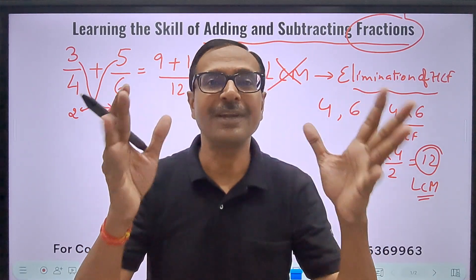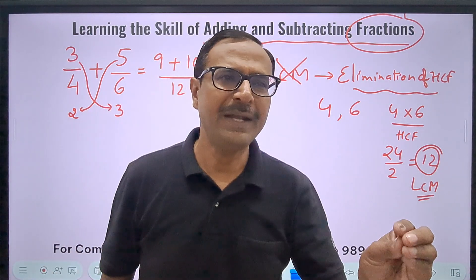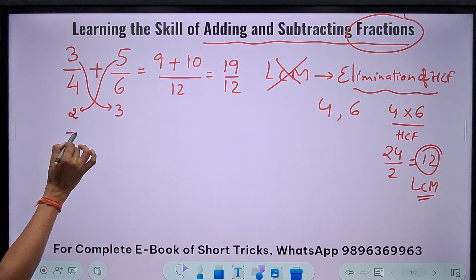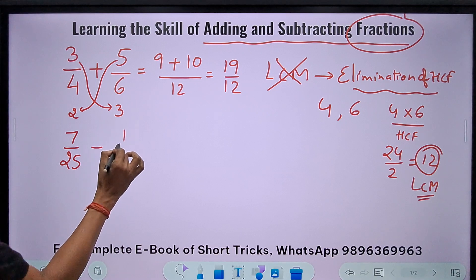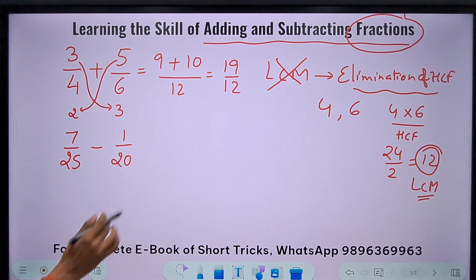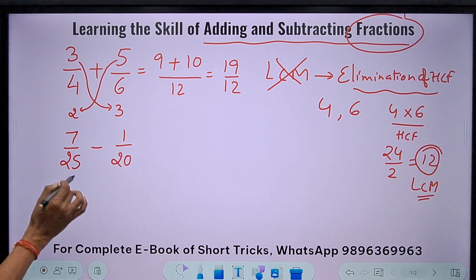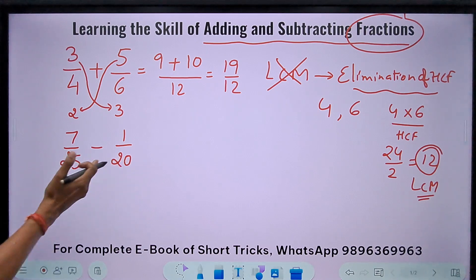I have taken a very small example right now. Let me enter into a little bit larger examples. Let's see this. Suppose I have to do 7/25 and subtract 1/20 from that. Now see, again the students are going to struggle here because they will find LCM of 25 and 20.